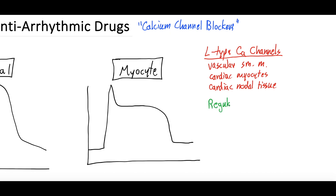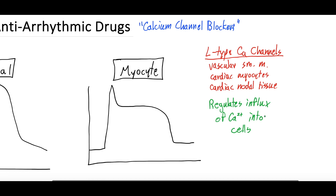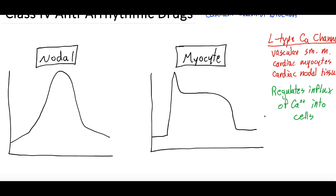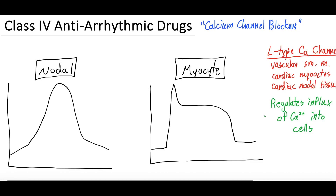The L-type channels regulate the influx of calcium into these various cells and thus cause changes to those cells. Specifically for the action potential, we need to talk about the nodal tissue and the myocytes. Calcium channel blockers affect both cardiac myocytes as well as cardiac nodal tissue. The action potential that you see with nodal tissue and myocytes are different, and it's worth discussing.